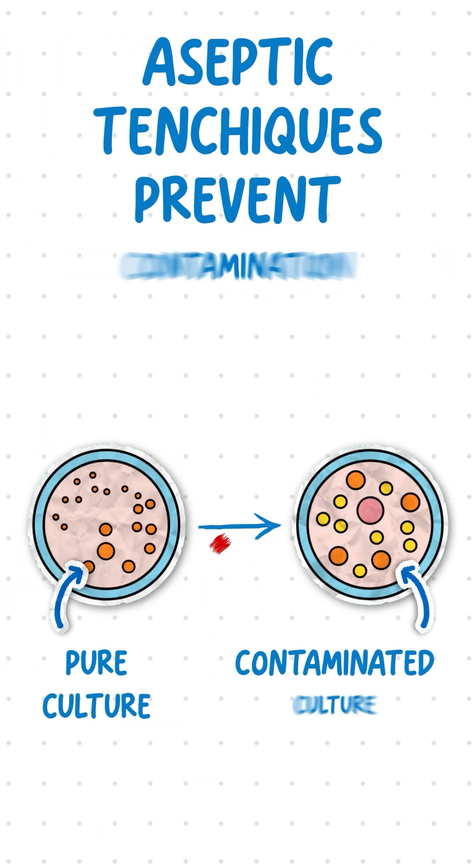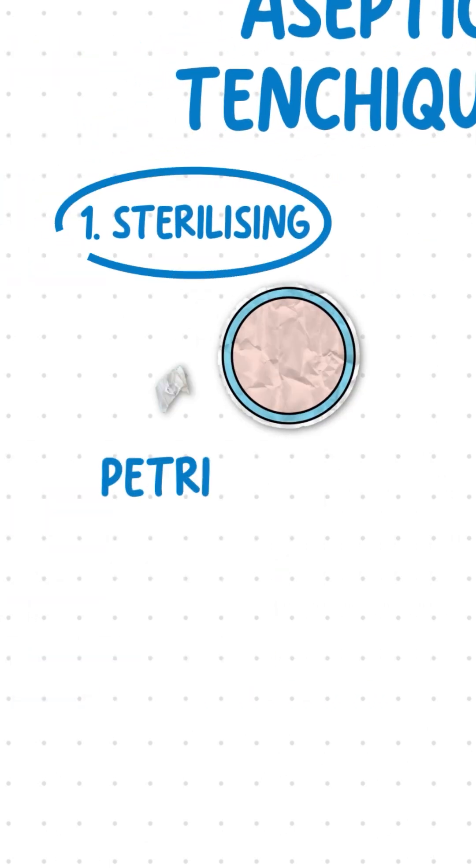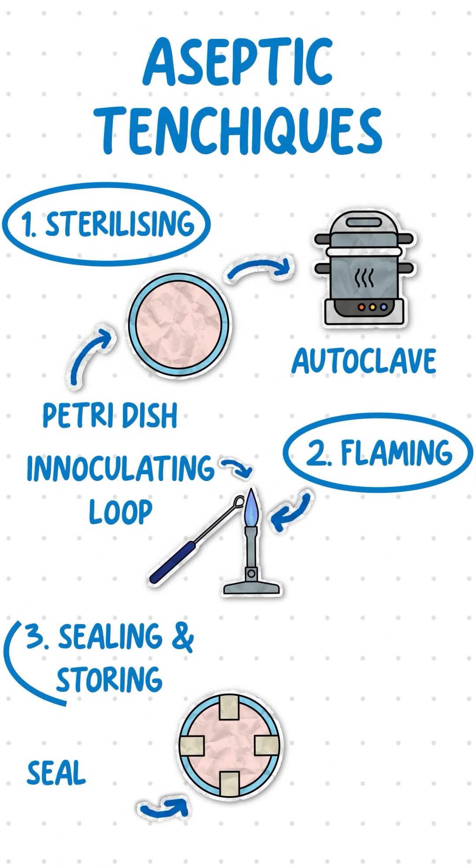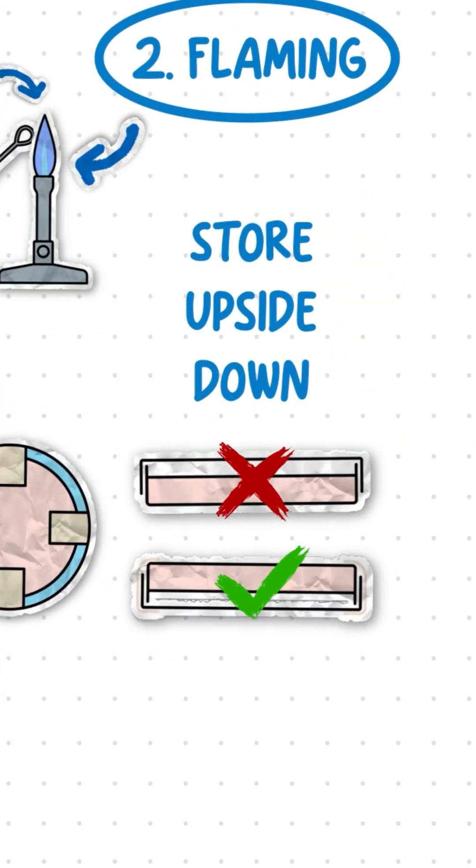Aseptic techniques prevent contamination of the culture. These techniques include sterilizing petri dishes in an autoclave, flaming equipment, and sealing and storing petri dishes upside down to block airborne bacteria.